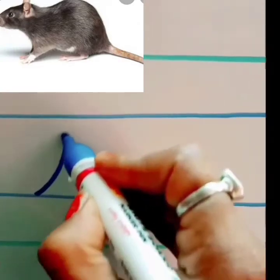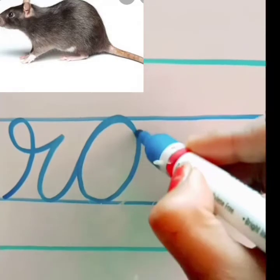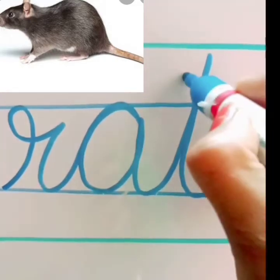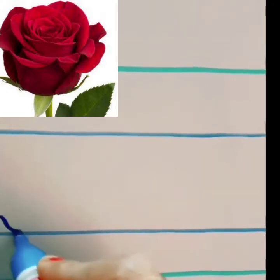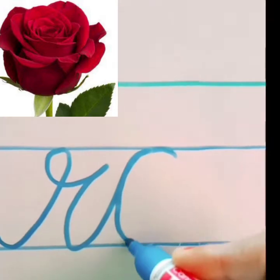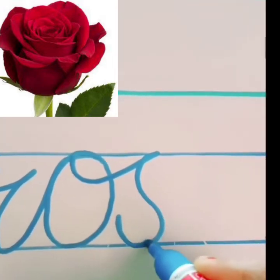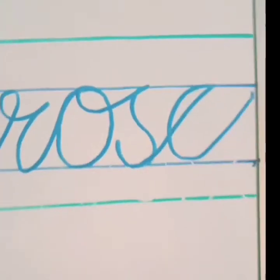R for rat, three letter word. R, A, T, rat. R for rose, four letter word. R, O, S, E, rose.